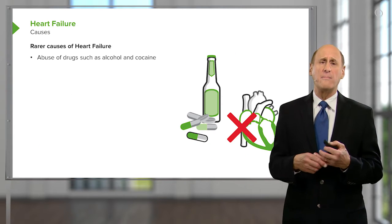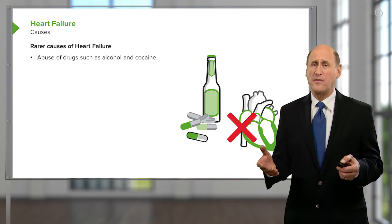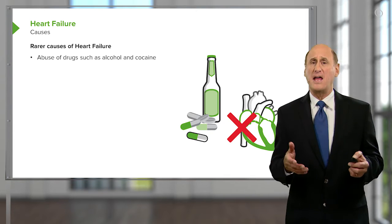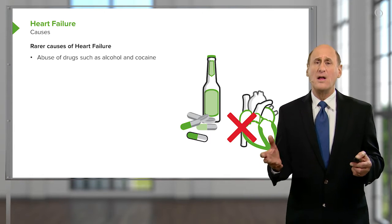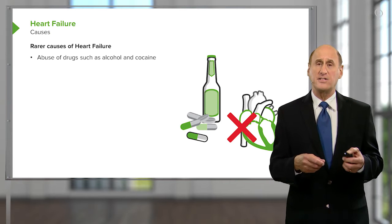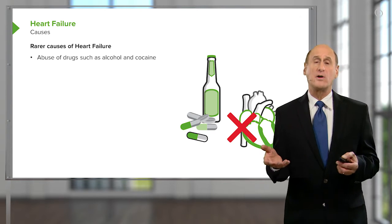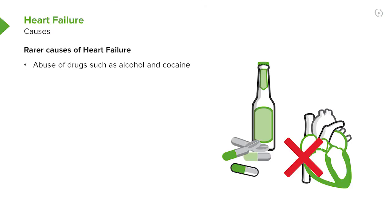There are a number of rarer causes of heart failure. For example, in the United States, one of the commonest causes of cardiomyopathy is excessive alcohol intake. Alcohol is a poison for the myocardium — taken in small amounts it's beneficial, increases the HDL level, and can be pleasant in a social setting. But excessive alcohol can lead to cardiomyopathy and, of course, a lot of other problems such as liver failure from cirrhosis.